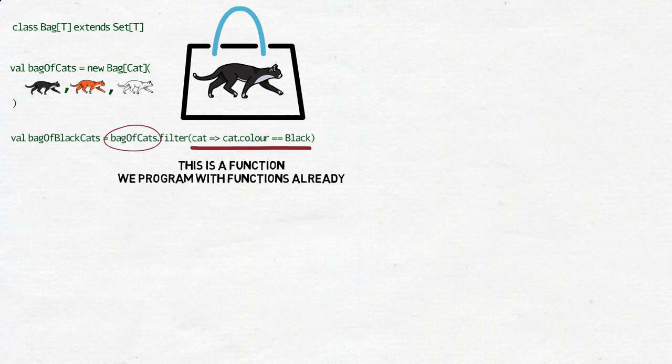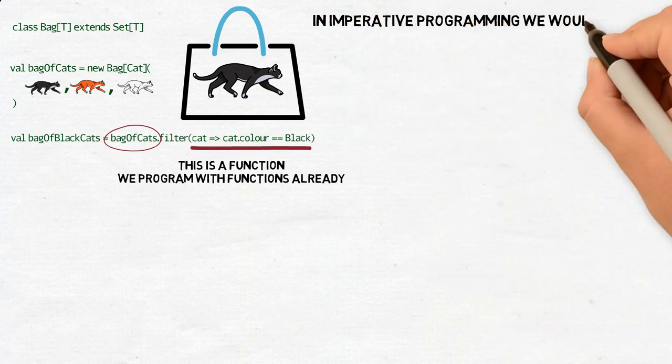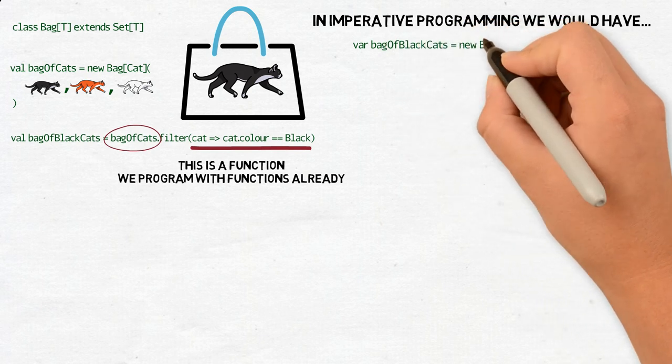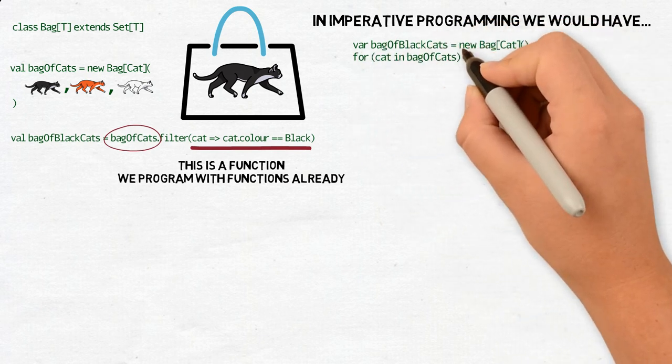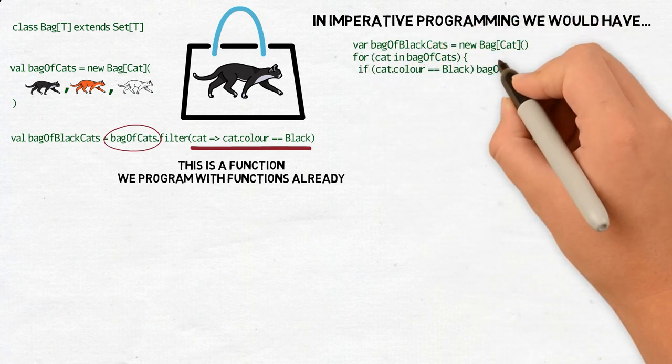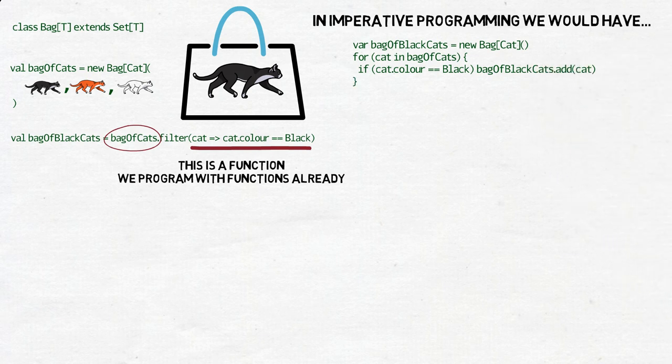In imperative programming, to do that, we would use a loop. We would create a new, mutable, empty collection at first, and then run a for loop for all cats in the original collection, and if they are black, we would put them in the new collection.